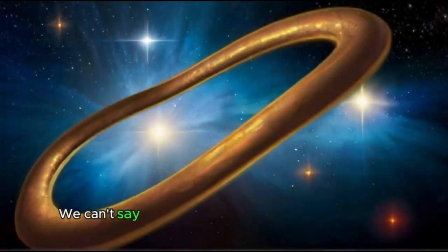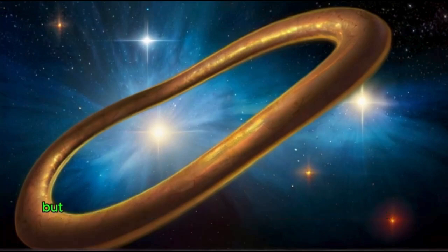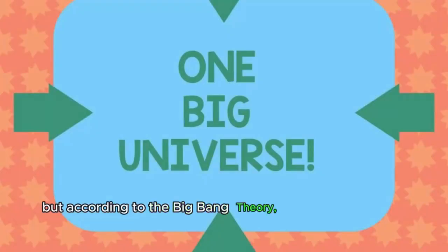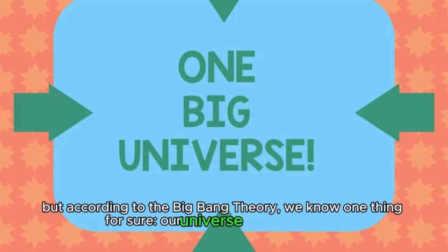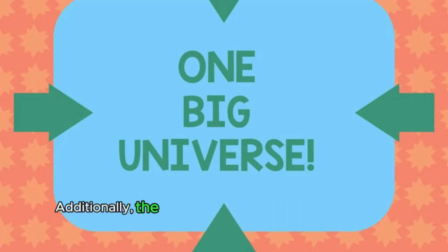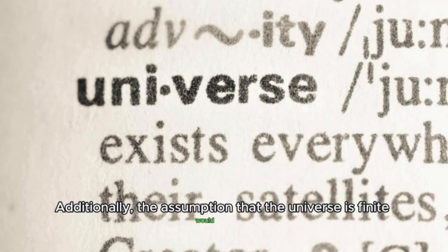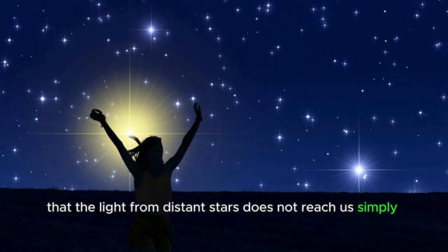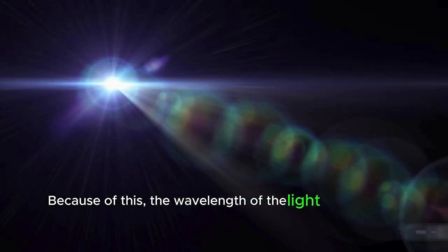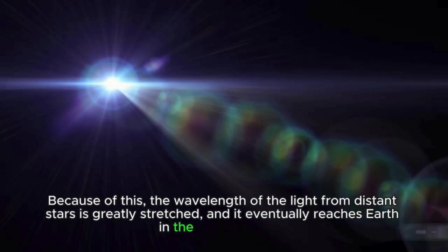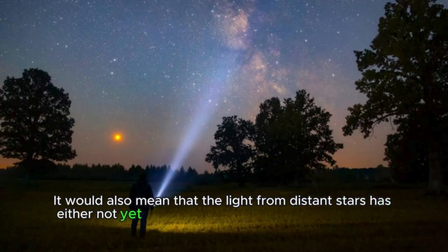We can't say for sure whether our universe is infinite. But according to the Big Bang Theory, we know one thing for sure, our universe has a beginning. Additionally, the assumption that the universe is finite would mean that the light from distant stars does not reach us simply because our universe is constantly expanding. Because of this, the wavelength of the light from distant stars is greatly stretched, and it eventually reaches Earth in the infrared range. It would also mean that the light from distant stars has either not yet managed to reach us, or the stars have already died out.